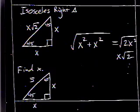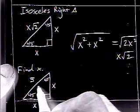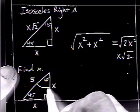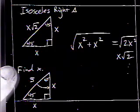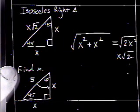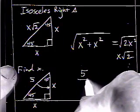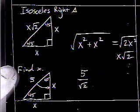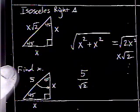Find x. You're given the hypotenuse. This is the version I was just describing to you. You're going from the hypotenuse back to the leg. So you need to take 5 and divide by radical 2. Now that technically is the answer right there, but we rationalize our denominators.